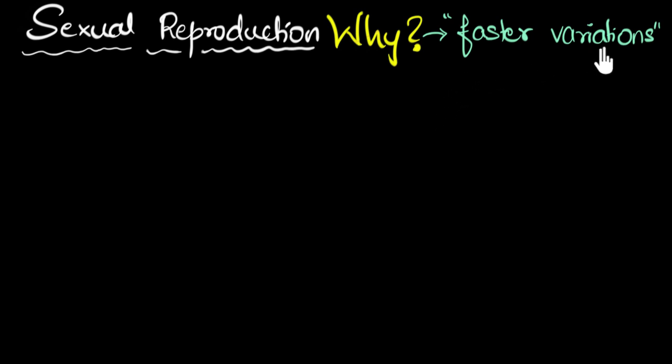They're important because they help species adapt to the ever-changing environment of our planet. Now, of course, if you need more details on what I just said, then we have a dedicated video on this called variations. But since variations are important, it makes sense to have these variations faster. And that's basically why we have sexual reproduction.